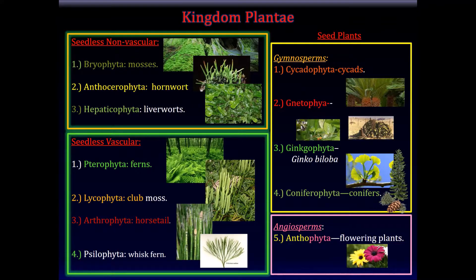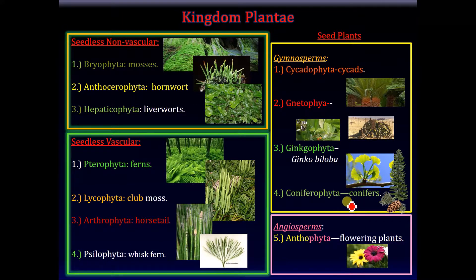That concludes our brief survey of the gymnosperms, including the cycads, the Gnetophyta, the ginkgo biloba, and the coniferophyta. Now, we shall talk about the angiosperms — the flowering plants, or the Anthophyta.